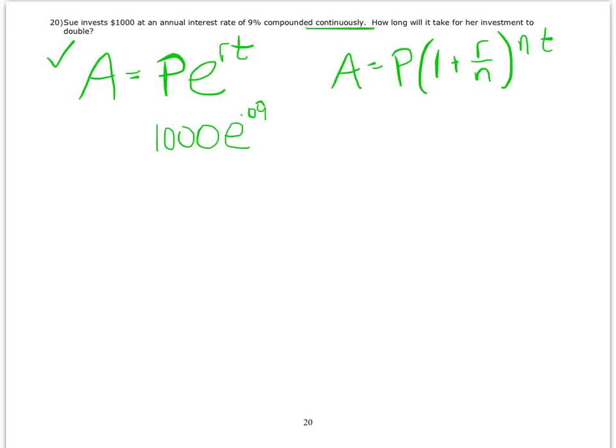And the question is, how long? So I'm going to be solving for the variable T. And how long until the investment doubles? Well, if it starts with 1,000, then double would be 2,000.